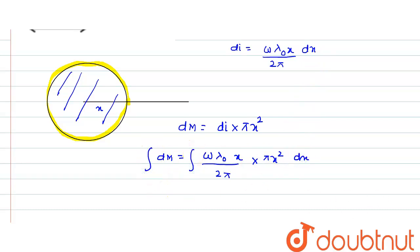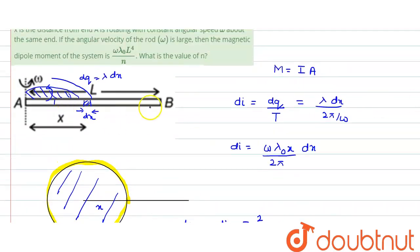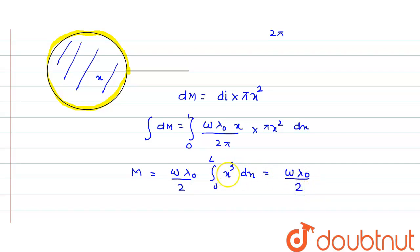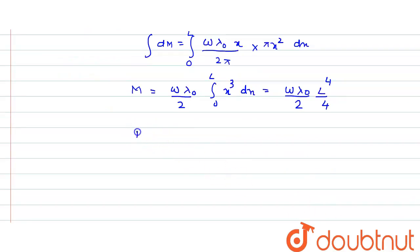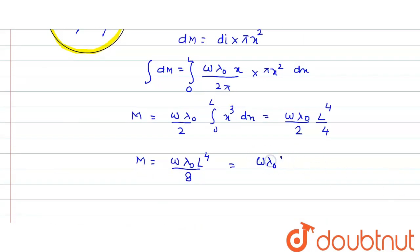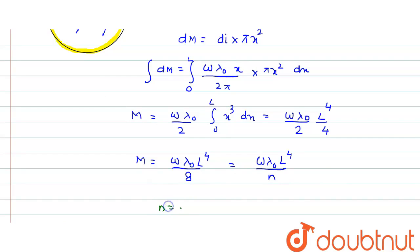To get the total magnetic moment, we integrate dm. Performing the integration with limits from 0 to L, since x varies from 0 to L, the constant terms lambda naught and omega come outside, and pi and pi cancel, leaving a factor of 2. The integral becomes the integral from 0 to L of x cubed dx. Integrating gives lambda naught omega divided by 2, multiplied by x to the power 4 divided by 4. Putting in the limit L gives L to the power 4 divided by 4, so the magnetic moment equals omega lambda naught L to the power 4 divided by 8. Comparing with the given expression omega lambda naught L to the power 4 divided by n, the value of n turns out to be 8.